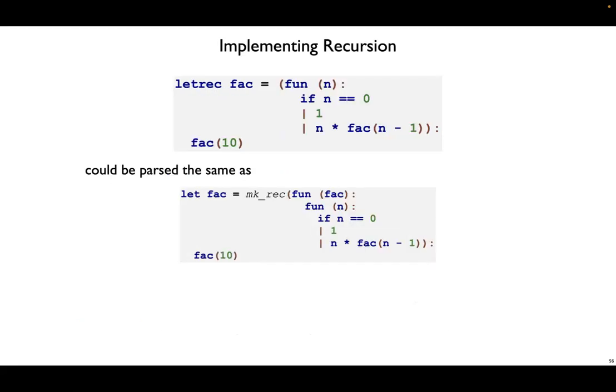Here's what we will do inside the parser. We start off with surface code like letRecFac with a natural definition of factorial on the right-hand side, and we parse that as letFac equal a call to makeRec. Inside the call to makeRec, we need to introduce another function which binds a local name for fac. This will be our self-applied fac.